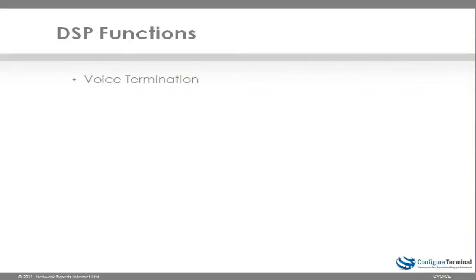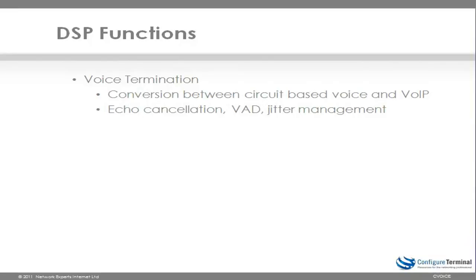There are four functions or uses of DSPs in a Cisco IP telephony environment. The first one is voice termination. DSPs do a conversion between circuit-based voice and voice over IP — in other words, converting from a traditional PSTN connection such as FXO, T1, or E1 PRI to voice over IP. It provides for echo cancellation, voice activity detection, and jitter management.